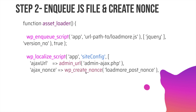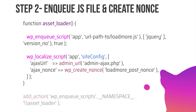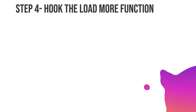We create the nonce using wp_create_nonce with the action 'load-more-post-nonce', and set that equal to the ajax_nonce variable. If you don't know what nonces are, I have an extensive video on the subject — basically they are used for security. Then we use wp_enqueue_scripts and hook our function to that.